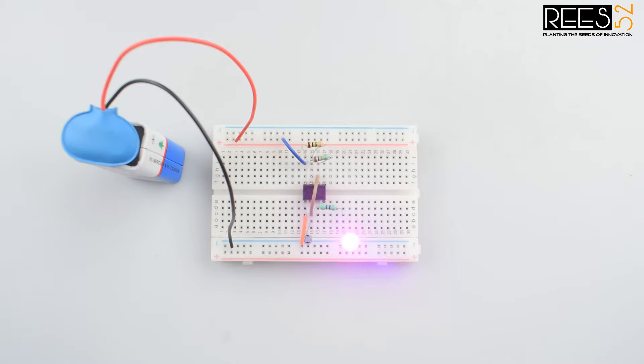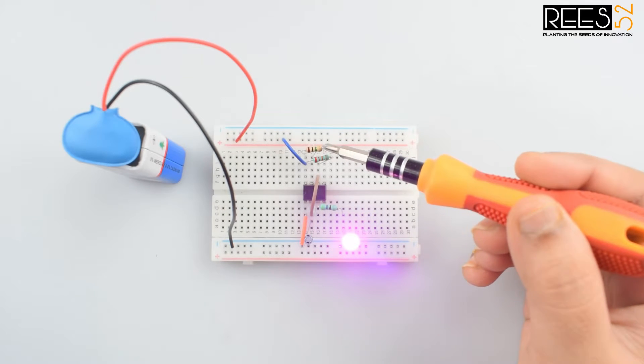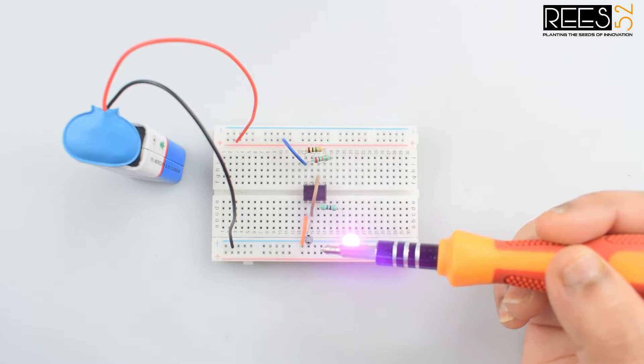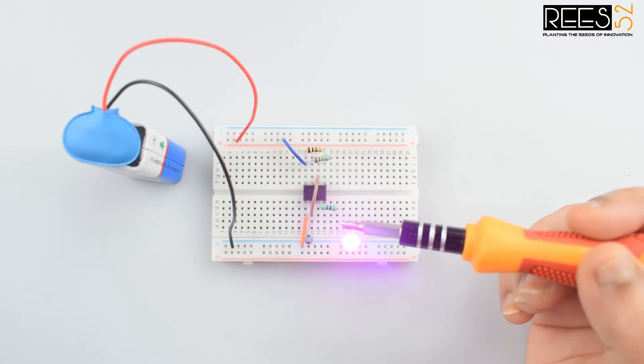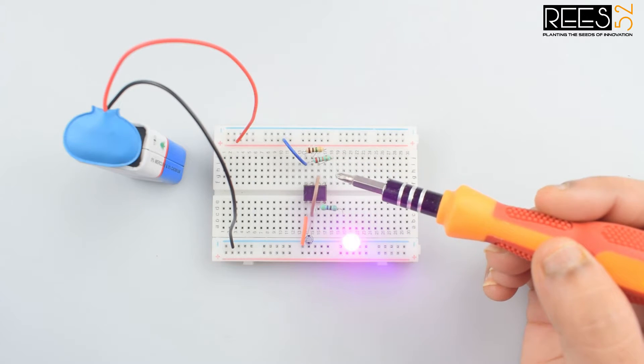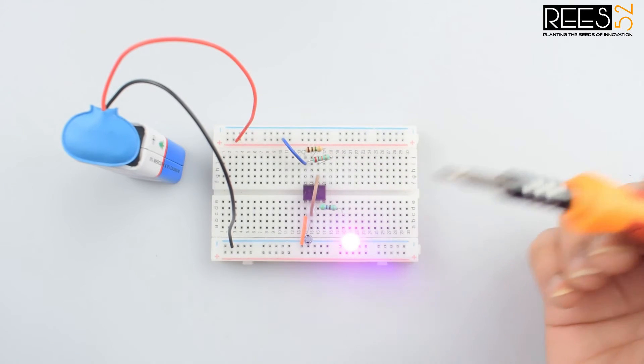The output stays high for a time based on the 1 megaohm resistor plus the 22 kilohm resistor as the capacitor charges, then goes low for a short time based on the 22 kilohm resistor discharging the capacitor. Of course, the blinking frequency can be varied by changing the capacitor value from 4.7 microfarad to 100 microfarad.